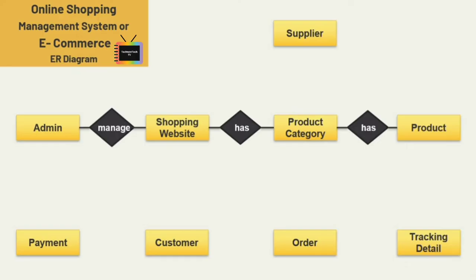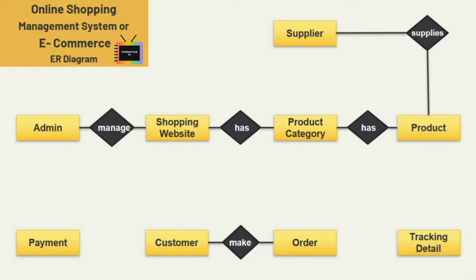Product category has different products. Next we have the supplier and product entities — there are many suppliers who list their products on the shopping portal, so here I'm adding the relation 'supplies.' So supplier supplies product, and customer makes or places an order on the website.